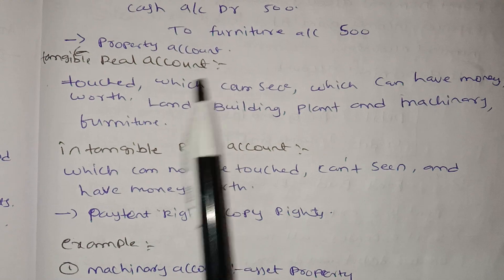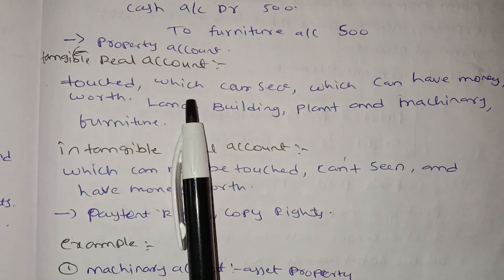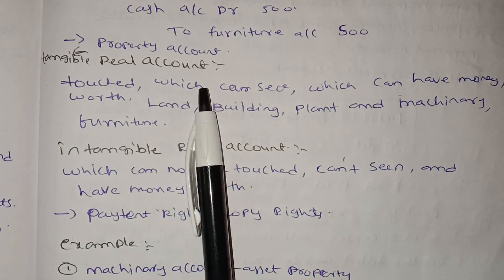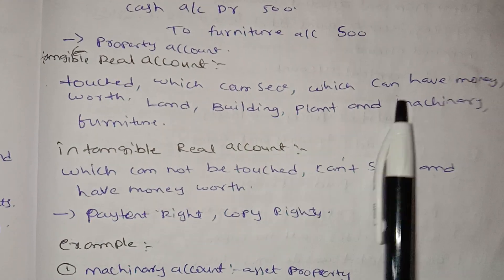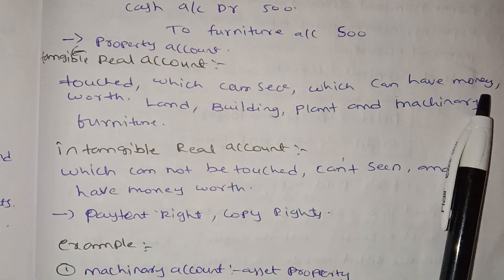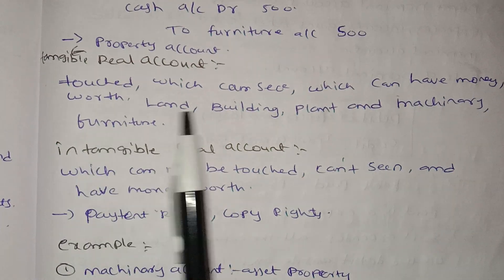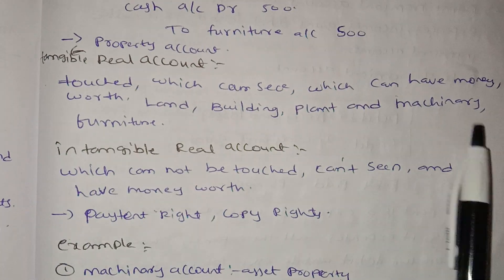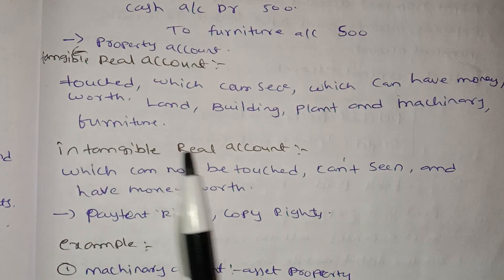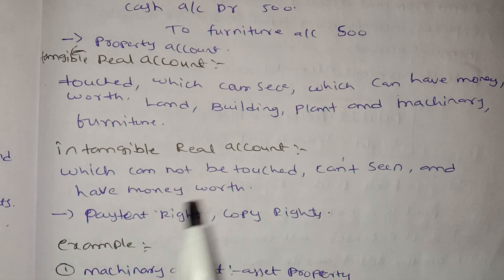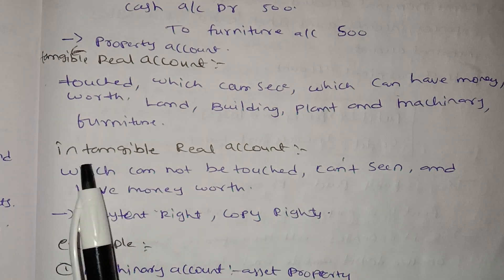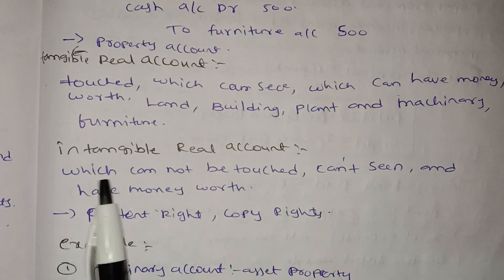Tangible real accounts are assets that can be touched and seen and have monetary value: land, building, plant, machinery, furniture. These are all tangible real accounts. Intangible real accounts are assets that cannot be touched or seen, but still have monetary value.